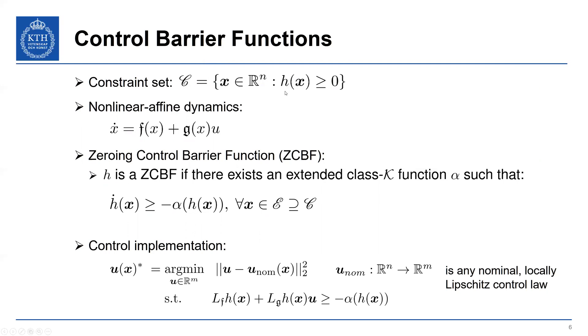H, the function that defines a constraint set, is a ZCBF if there exists an extended class K function alpha such that this condition holds. So this is a Lyapunov-like condition, saying that H dot is going to be greater than or equal to minus alpha H. However, it's less restrictive because it doesn't require positive definiteness of H dot. In fact, H dot can be decreasing, but as the system approaches the boundary where H is equal to zero, then H dot must be non-negative.